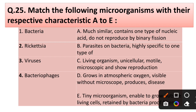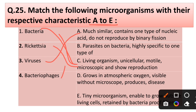Question number twenty-five: match the following microorganisms with their respective characters. Bacteria — living organism, unicellular, motile, microscopic, slow reproduction. Rickettsia — also living organism, unicellular, motile, microscopic, slow reproduction. Virus — contains one type of nucleic acid, does not reproduce by binary fission. Bacteriophage — parasite on bacteria, highly specific to one type of host.